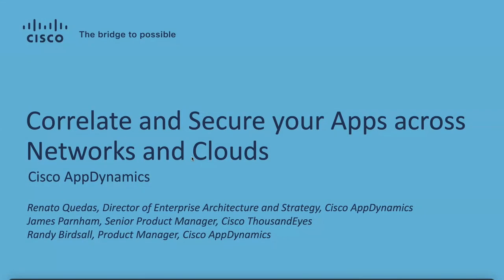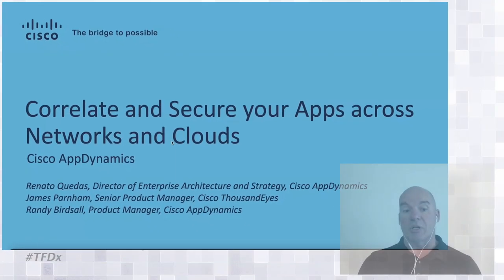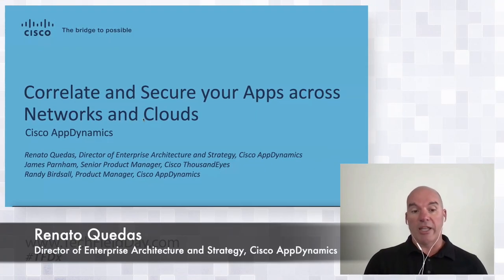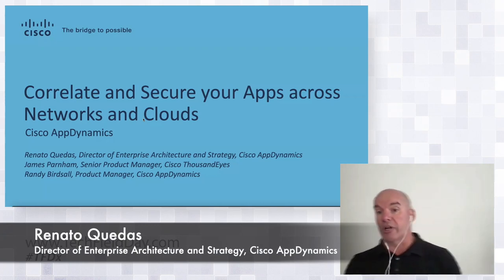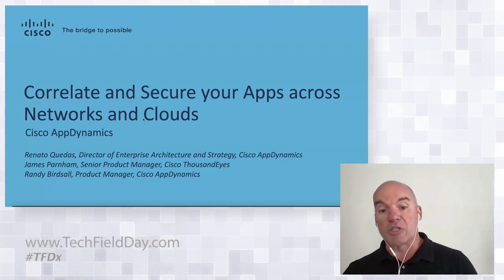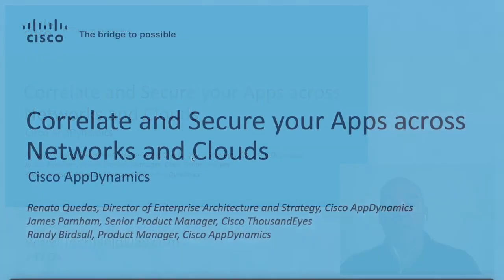We're here today to talk about — you just saw a cool presentation about the integration of AppDynamics and ACI. We're going to take that one step further and talk about how we do correlation and secure your apps across networks and clouds. I'm joined by James Parnhunt and Ren Bertol. I'm the director of enterprise architecture and strategy at AppDynamics. So without further ado, let's get going.